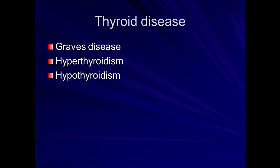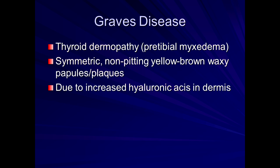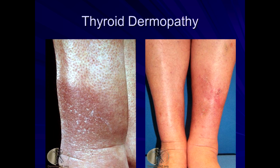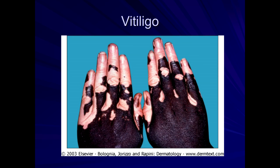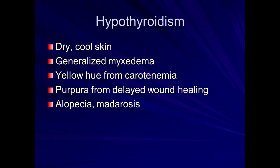Thyroid disease: pre-tibial myxedema may occur on the lower legs due to deposition of hyaluronic acid. You see here on the lower legs these edematous-like, woody, indurated patches or plaques — thyroid dermopathy. Hyperthyroid patients have warm, moist skin, flushing, redness of the palms, and can also have hair loss and vitiligo with depigmentation. Hypothyroid patients have the opposite — cold, dry skin, dryness, generalized myxedema, and can have a yellowish hue — so-called carotenemia — a yellowish hue of the palms.